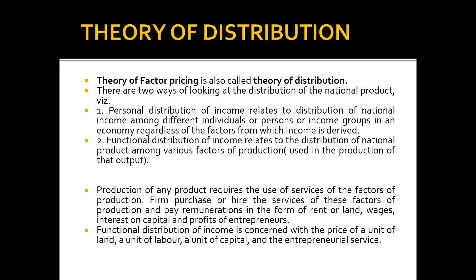That is why we call it theory of distribution or theory of factor pricing. There are two ways of looking at the distribution of national product. Number one is personal distribution, which relates to the distribution of national income among different individuals, persons, or income groups in an economy, regardless of the factors from which income is derived.